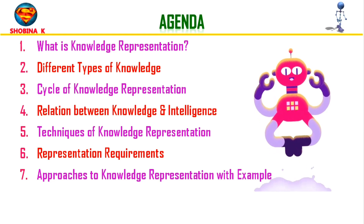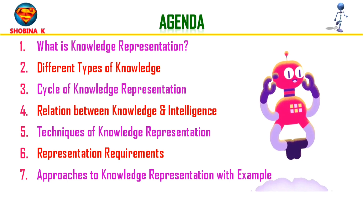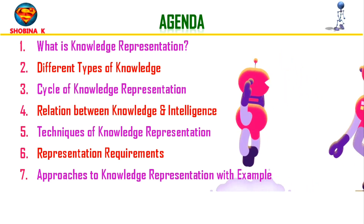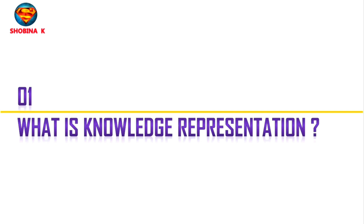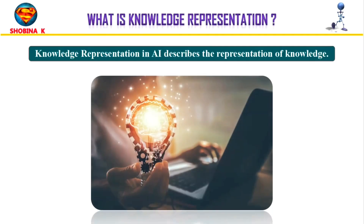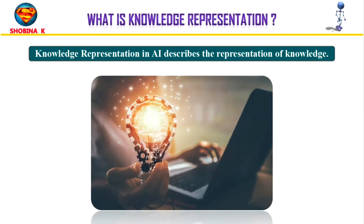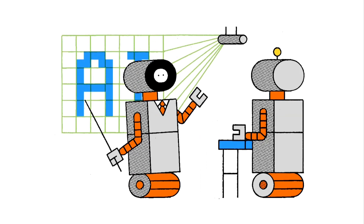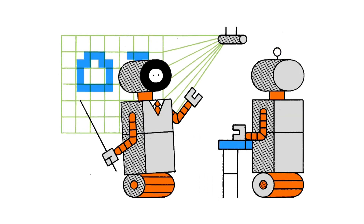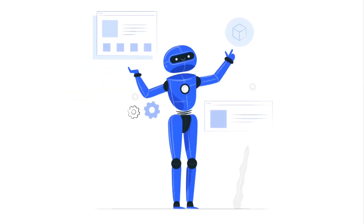We will wrap it up with examples and approaches for knowledge representation in AI. So, what is knowledge representation in AI? Knowledge representation in AI describes the representation of any knowledge. Basically, it is a study of how the beliefs, intentions, and judgments of an intelligent agent can be expressed suitably for automated reasoning. One of the primary purposes of knowledge representation includes modeling intelligent behavior for an agent.